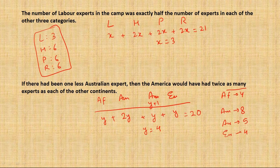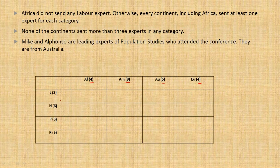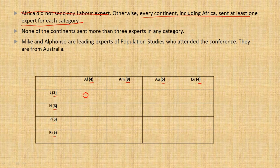Now I'll combine these findings in a table with continents as rows and categories as columns. The remaining three points help fill the cells. The first of these says Africa did not send any labor expert, so I write zero in Africa's labor cell. Otherwise, every continent including Africa sent at least one expert per category - meaning none of the other 15 cells can be zero.